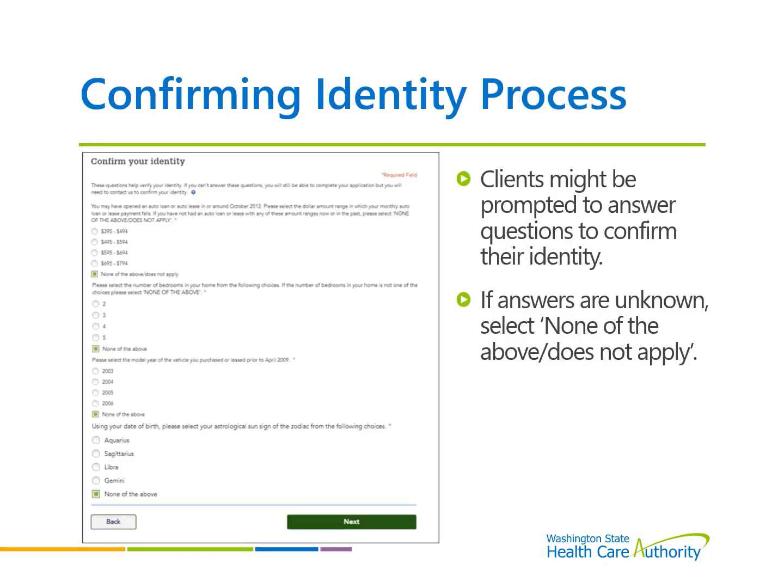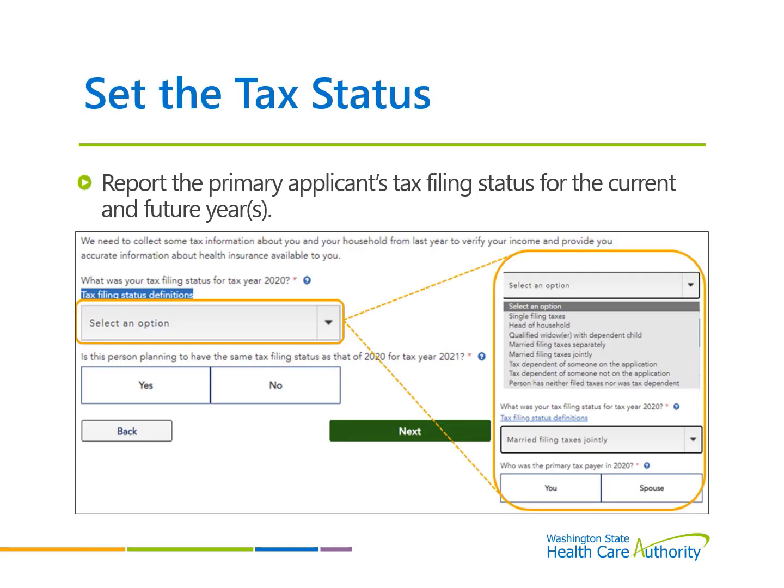On occasion, the Health Plan Finder application may require additional questions to be answered to confirm the applicant's identity. If the answers are unknown, select the answer 'None of the above does not apply' to proceed. Clients will be prompted to report their tax filing status for the current year as well as their expected tax filing status for the following years.